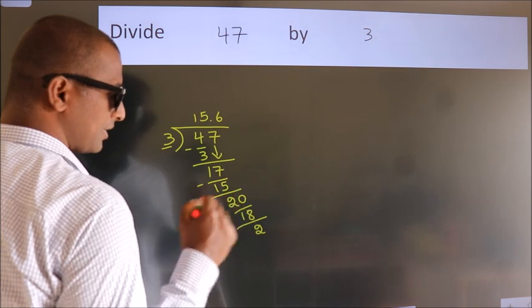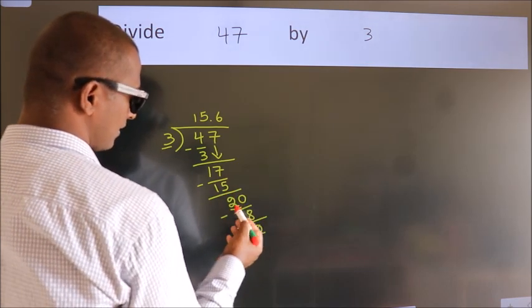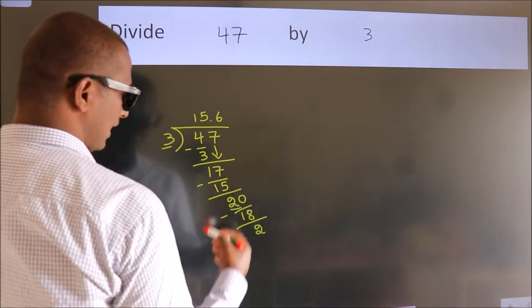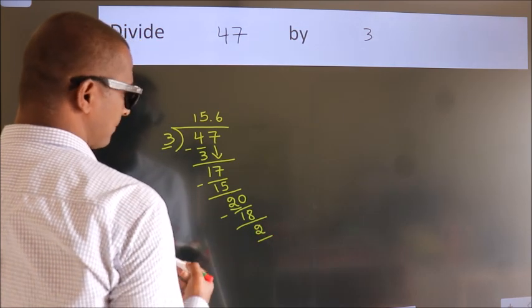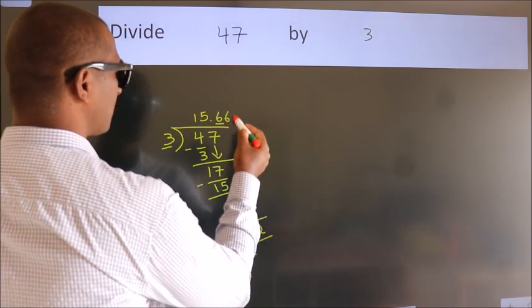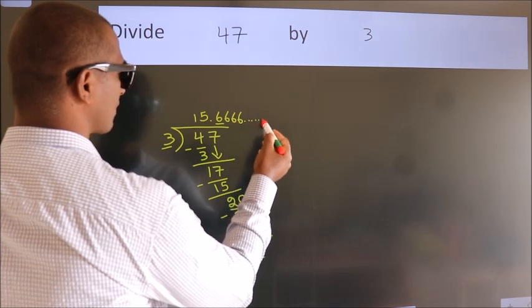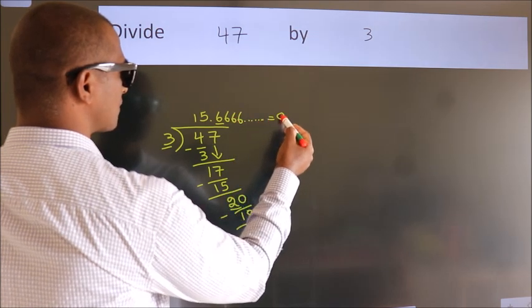Now you observe. We had 2 here, and we got 2 again. That means this number keeps on repeating. So this is our quotient.